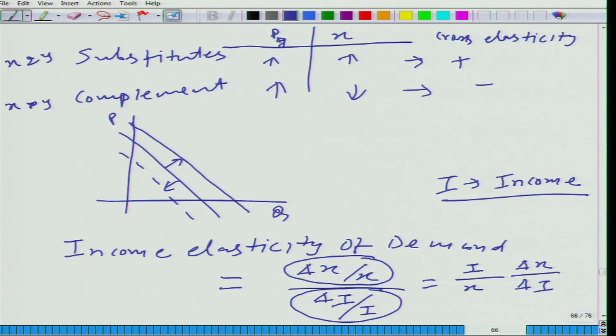This is income elasticity of demand. So is it positive or negative? Can you tell me? Always. Not always. For normal goods, it is positive. Remember we talked about two different kinds of good.